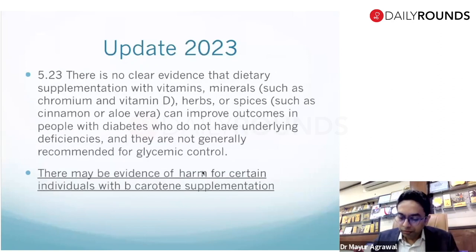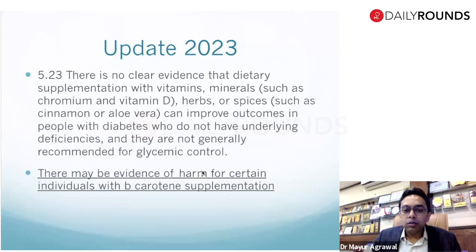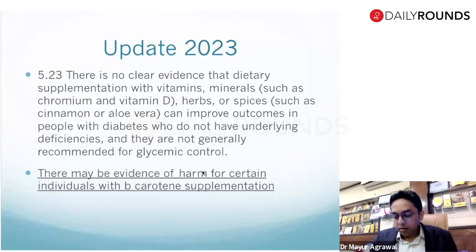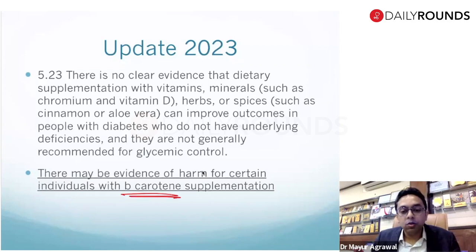In 2023, the guideline retains that vitamins, minerals, chromium, vitamin D, herbs, and spices do not influence glycemic control and are not generally recommended due to lack of clear evidence. A new addition in 2023 — not present in 2022 — is that beta-carotene supplementation may cause harm for certain individuals.